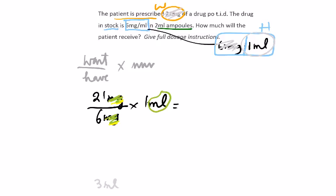What happens here? Push the buttons, do the calculation. We get, as before, 3.5 mils and the instructions, same as before, 3.5 mils, orally, three times a day. And you would write that down, of course, as we did before, orally or by mouth, three times a day.